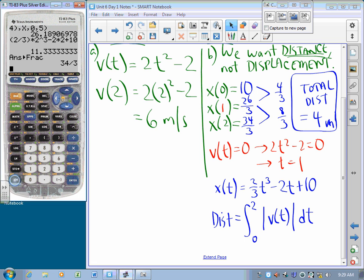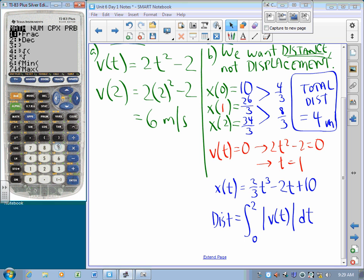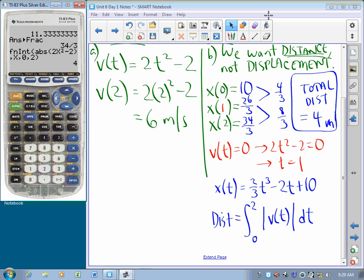That's speed. So, I ask my calculator what the integral of the absolute value of 2x squared minus 2 is with respect to x from 0 to 2, and I get the same answer. And I take a picture because, well, you know.